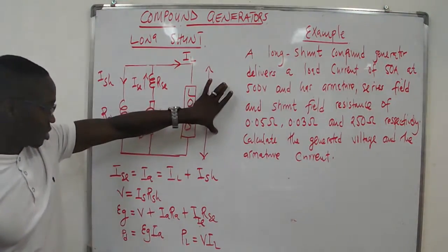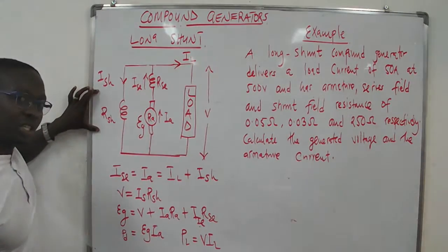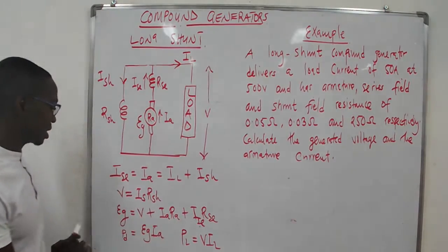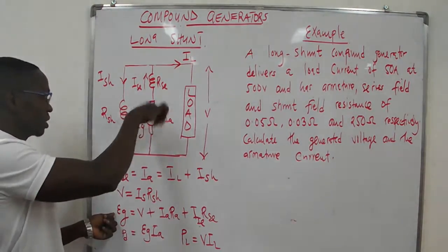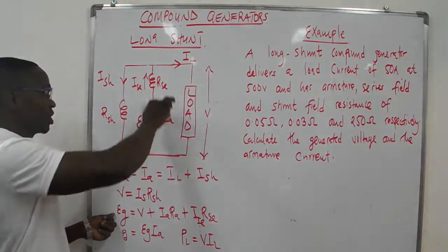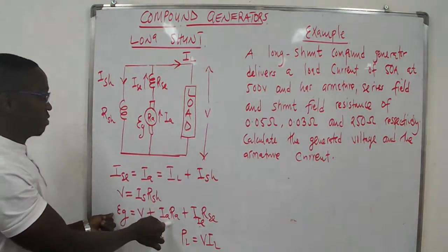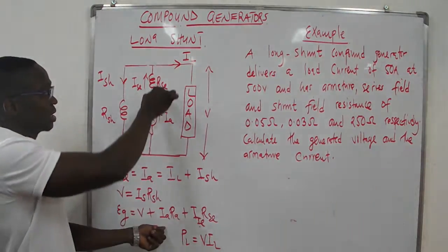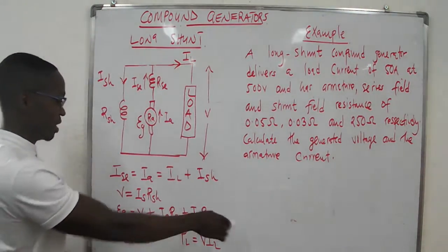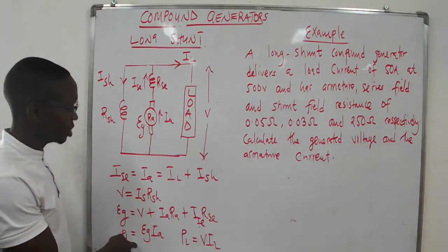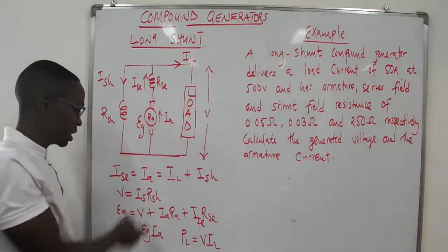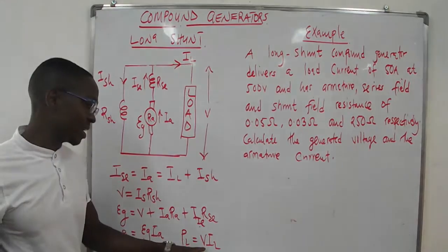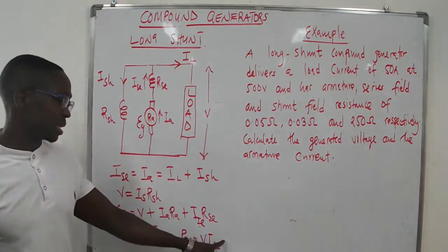For voltage: the terminal voltage is the same as the voltage across the shunt winding, given by shunt current times shunt resistance. The generated voltage is the summation of the terminal voltage, the voltage drop in the armature (IA·RA), and the voltage drop at the series winding. There are also two power quantities: power developed in the armature, given by generated voltage times armature current; and power delivered to the load, given by load voltage times load current.